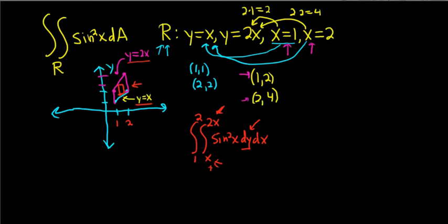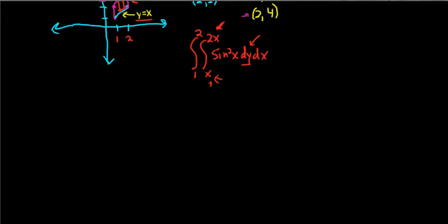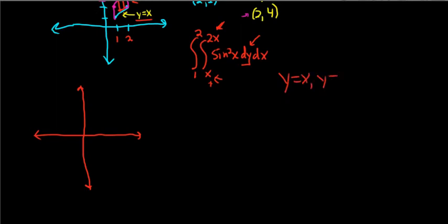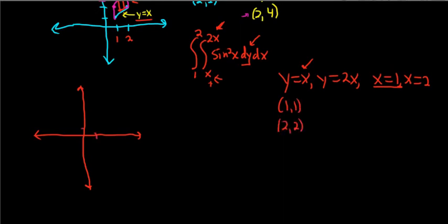Now we're going to attempt dx dy, so I'll quickly redraw the picture. There's y and there's x. We had y equals x, y equals 2x, x equals 1, and x equals 2. We plugged 1 in and got (1, 1) and (2, 2), giving us the line y equals x.